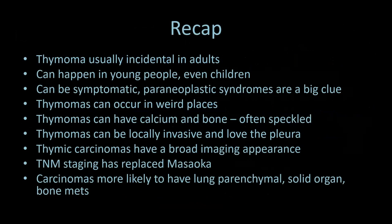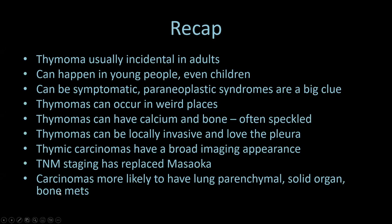In recap: thymomas are usually incidental in adults but can occur at any age; paraneoplastic syndromes including myasthenia, pure red cell aplasia, and Good syndrome are major clues. Thymomas can occur in unusual locations including the cardiophrenic angle and ectopic sites. Speckled calcium and bone can be seen in thymomas. They can be locally invasive and love the pleura. Thymic carcinomas have broad imaging appearances overlapping with thymomas. TNM staging has replaced Masaoka, and carcinomas are more likely to have lung parenchymal, solid organ, and bone metastases.